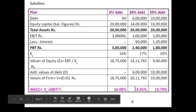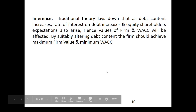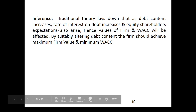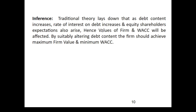We can understand this interpretation from the traditional approach of capital structure theories. The inference of traditional theory is: as debt content increases, the rate of interest on debt increases and equity shareholders' expectations also rise. Hence, the value of the firm and the weighted average cost of capital will be affected. By suitably ordering the debt content, the firm should achieve maximum firm value and minimum weighted average cost of capital. Thank you.